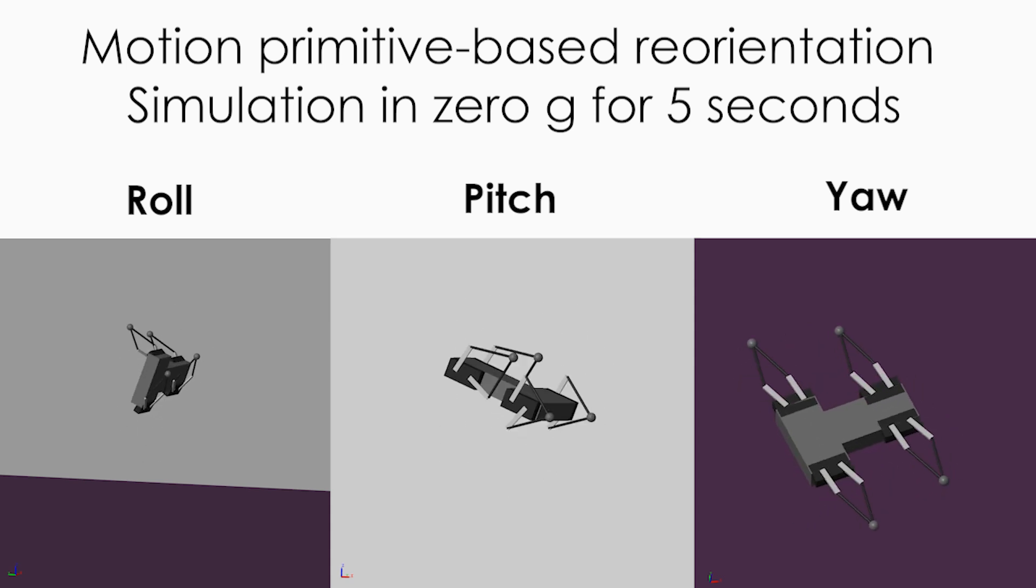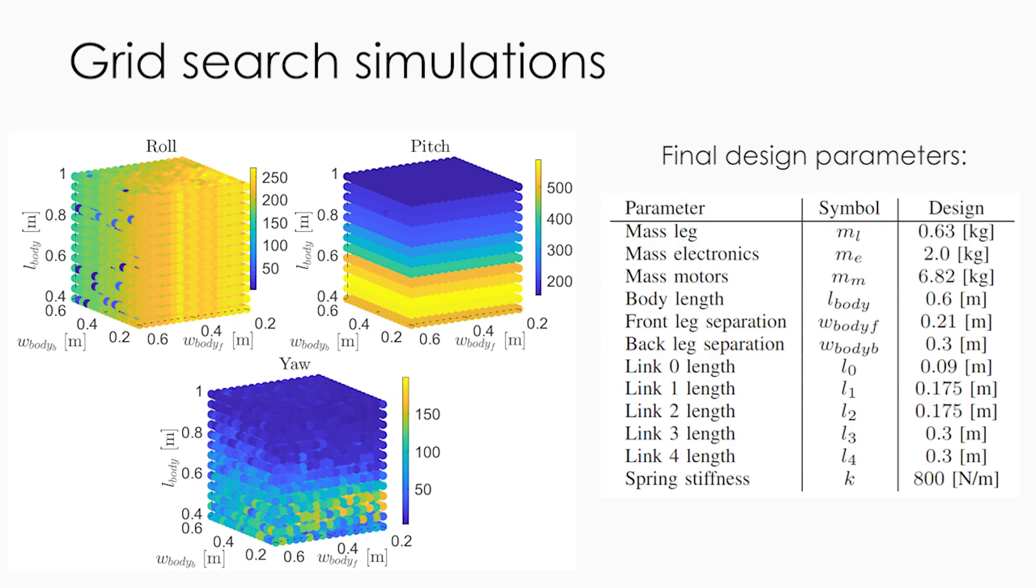The grid search optimization used a weighted scoring system to evaluate these results, which were used to define a set of optimized robot parameters.